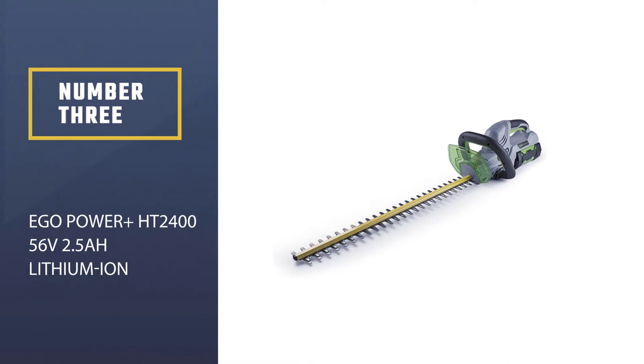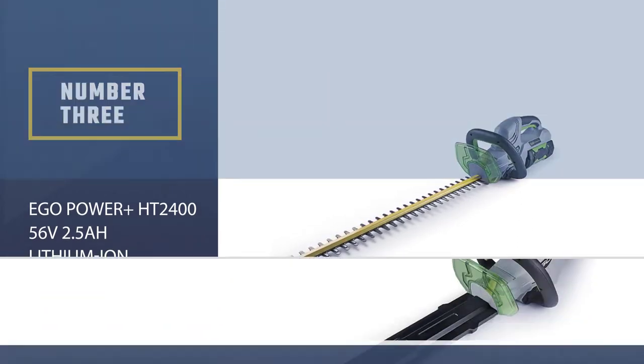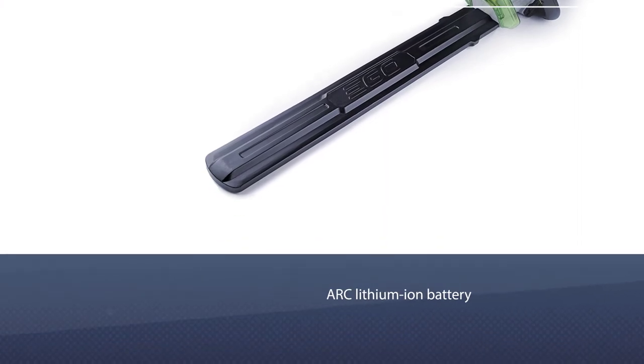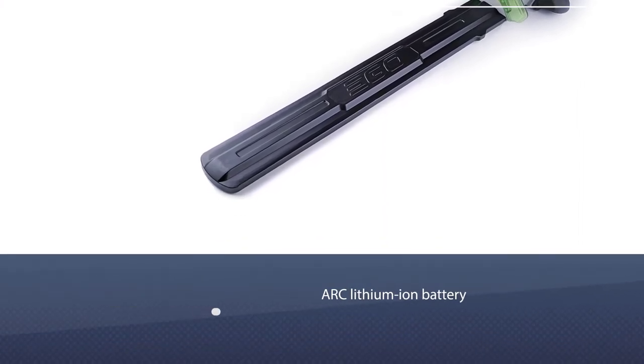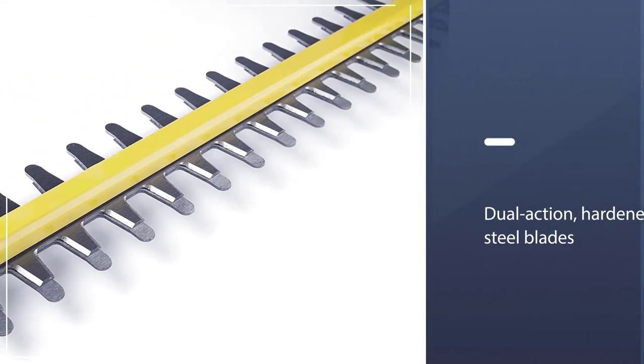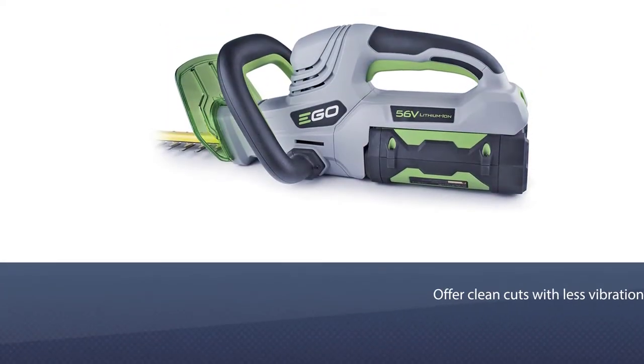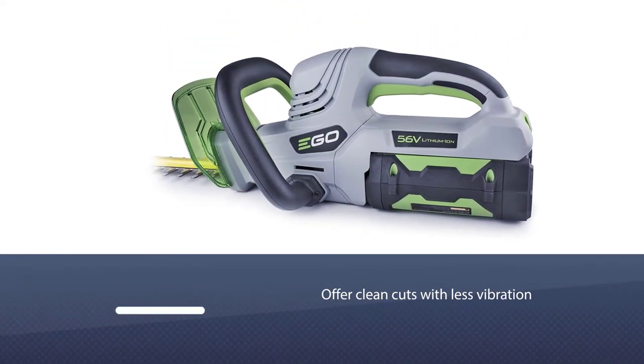Number three: EGO Power Plus HT2456 V2.5A lithium-ion cordless hedge trimmer. Want the high power of a gas fuel trimmer without all the pollution, costs, and maintenance? EGO's Power Plus HT2400 claims it can give you just that with its Arc lithium-ion battery.